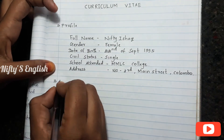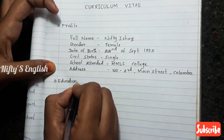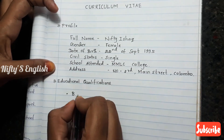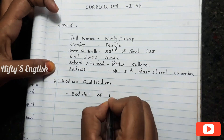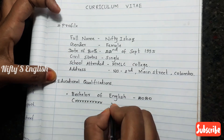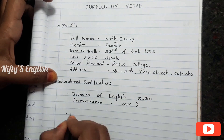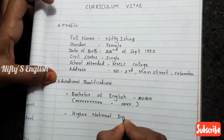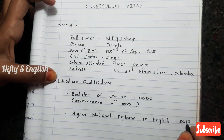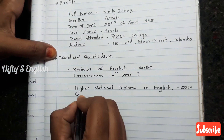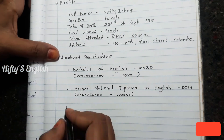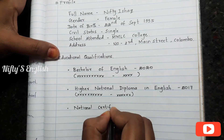The address is Number 3, Main Street, Kalambu. The second section is educational qualifications. First, Bachelor of English 2020 — I put the university name and place. The second one is High National Diploma in English 2017 — I put the institution's name and place.